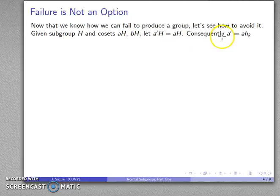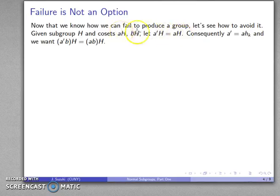And I know that a' has to be aHk, so that's one of our coset lemmas. And if you don't remember that you should prove it. And I want to make sure that a'bH is the same as abH. Because these two cosets are the same, I want to make sure the product of these two cosets is the same as the product of these two cosets.